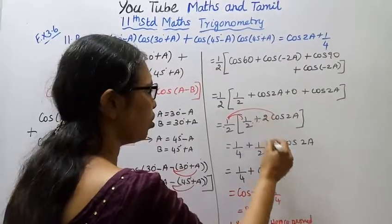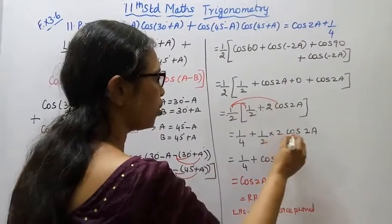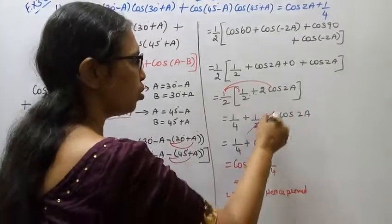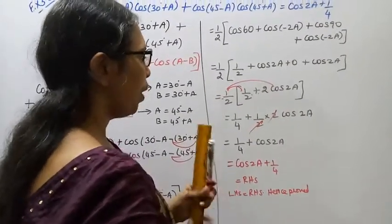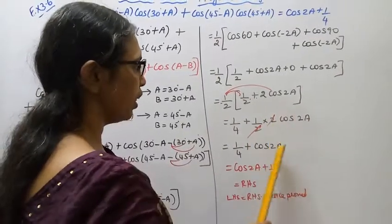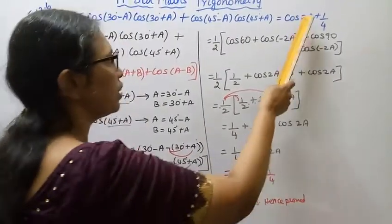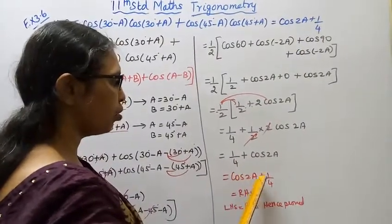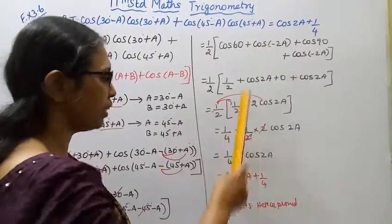Half into half plus cos 2A plus cos 2A, 2 cos 2A. 1 by 2 into 1 by 2 is 1 by 4, plus 1 by 2 into 2 cos 2A, 2 cancels, 1 by 4 plus cos 2A. Cos 2A plus 1 by 4.